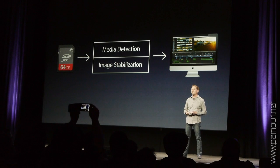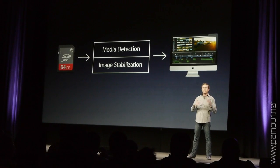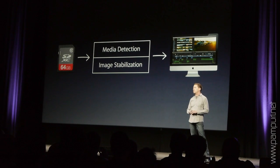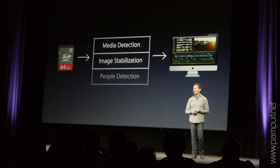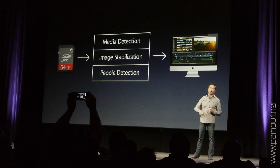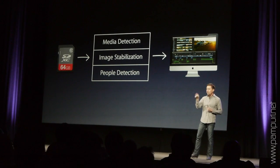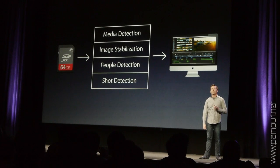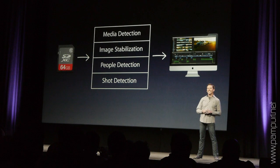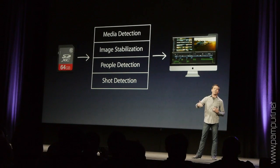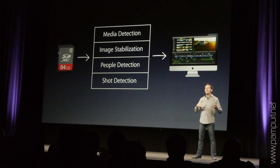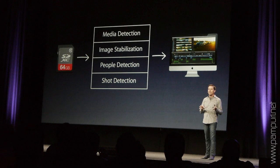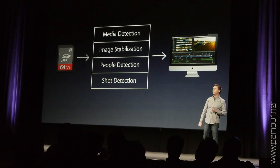We also wanted to do some things to help you in the organization process. During organization, you spend time figuring out what kinds of media you want to use. Some of those things you're uniquely qualified to do, and some the machine can help you with. With Final Cut Pro X, we're adding people detection, so on the way in we can identify shots with single people, two people, or groups. So when you go to look for interview shots, you just click on the single people group and immediately get to your media. We do similar things with shot detection — detecting medium shots, close-up shots, and wide shots. These are the kind of things that you need for organization but don't really add creative value to your workflow — we do that automatically for you.